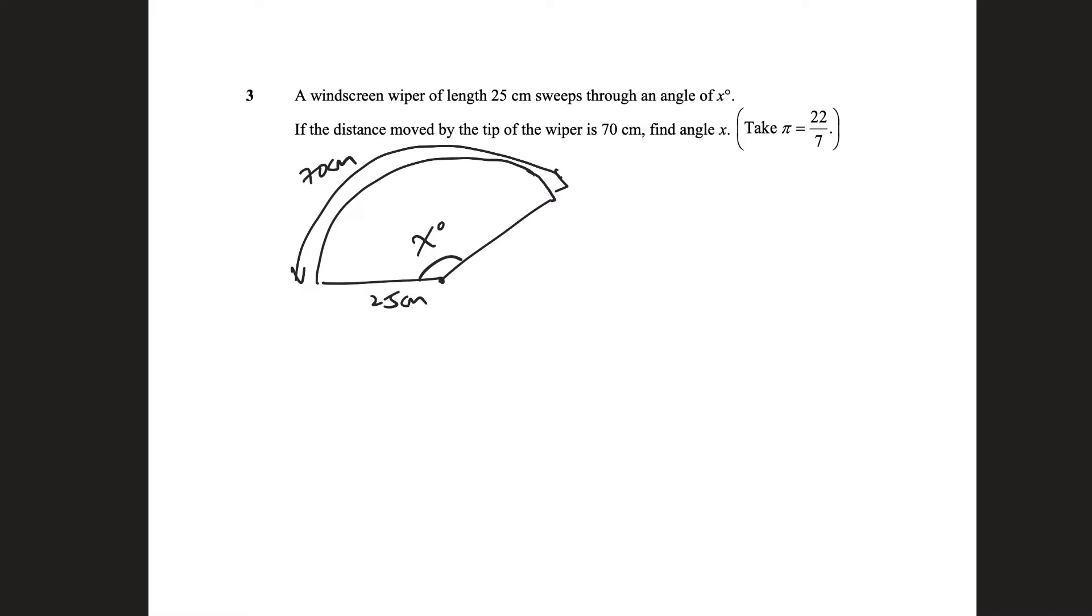And they're trying to ask you what is the angle of x. So our arc length formula tells us that arc length equals theta r, where theta is in radians. In this case, let's just plug it in. Arc length is 70cm in this case, and theta is x, but it's in x degrees. So we need to convert x degrees to radians.